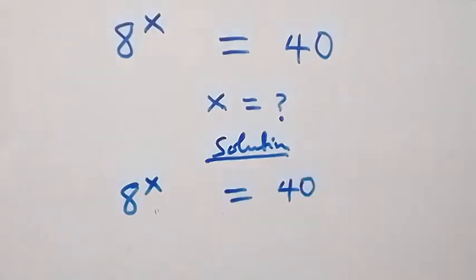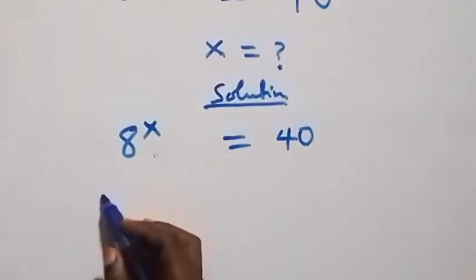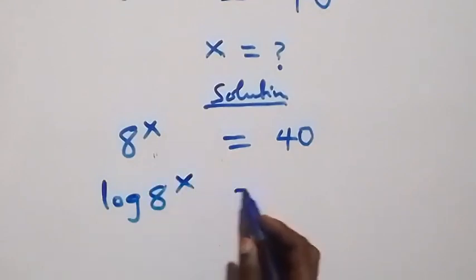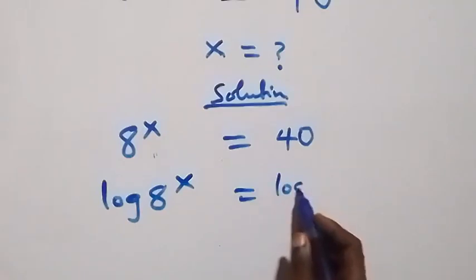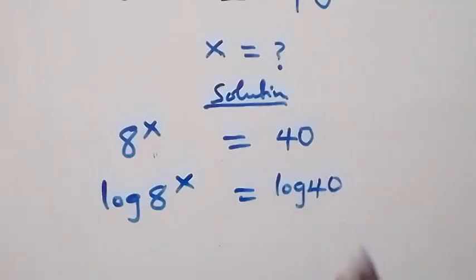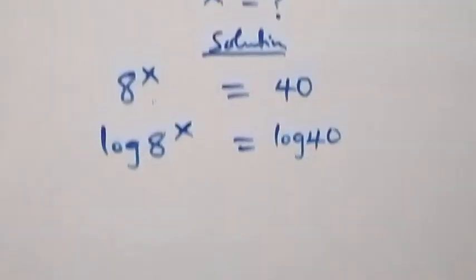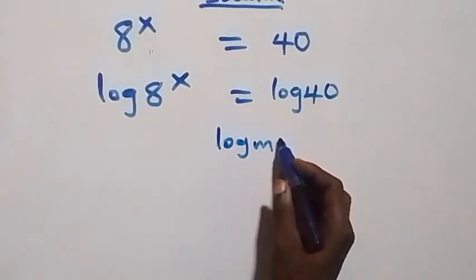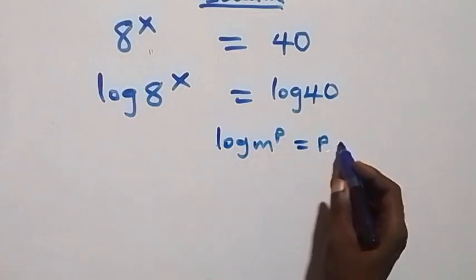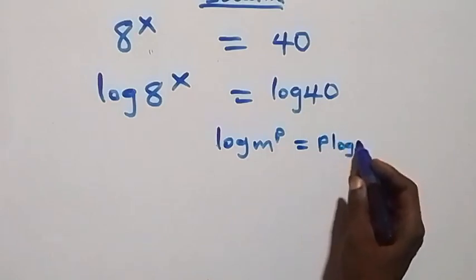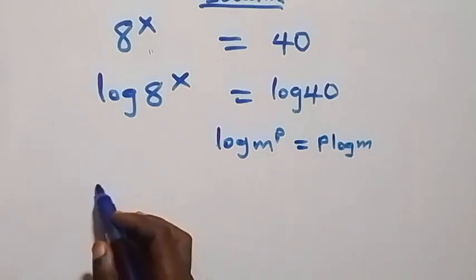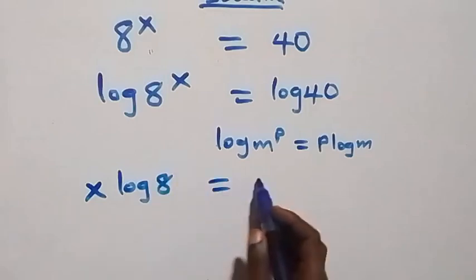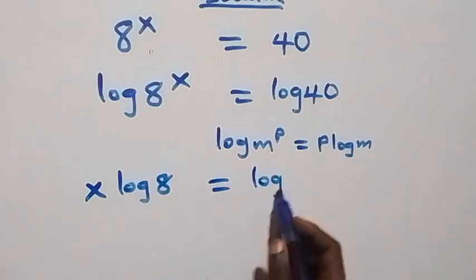Here let's take the log on both sides. We have log 8 raised to power x equals to log 40. Then from the power law of logarithm, that is log m raised to power p equals p log m, the power is x, so we have x log 8 equals to log 40 on this side.